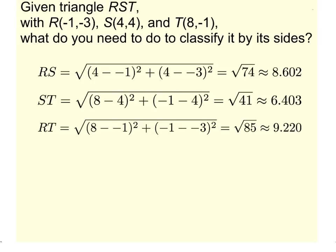So the distance formula says that RS is about 8.6, ST is about 6.4, and RT is about 9.2.